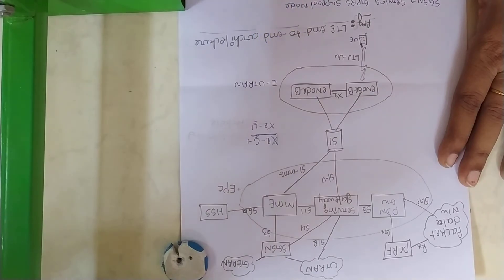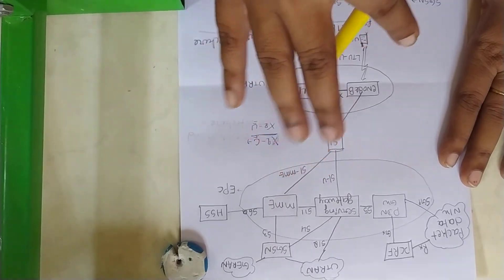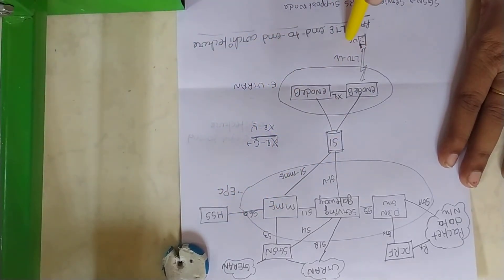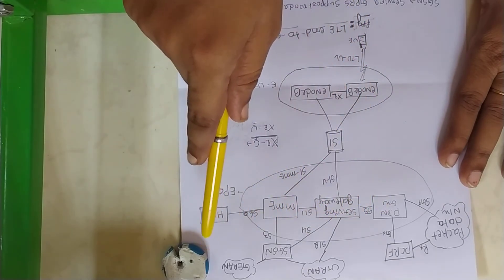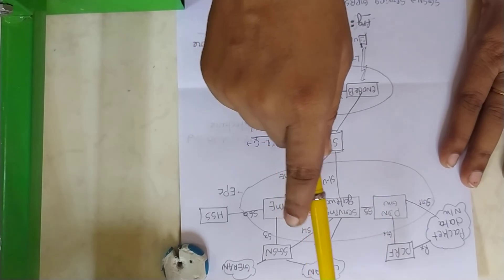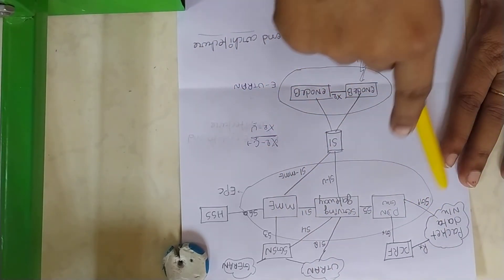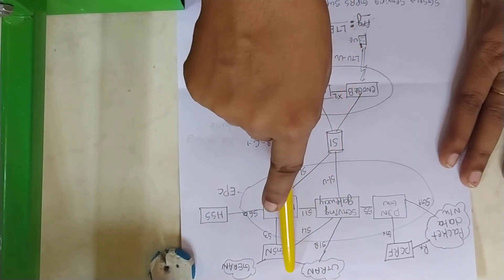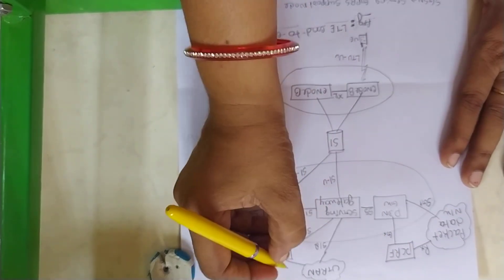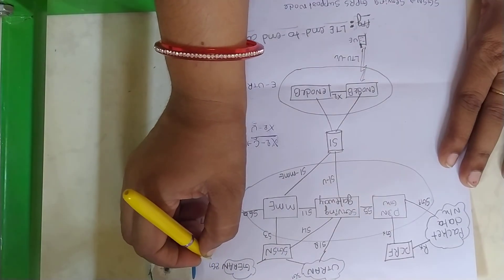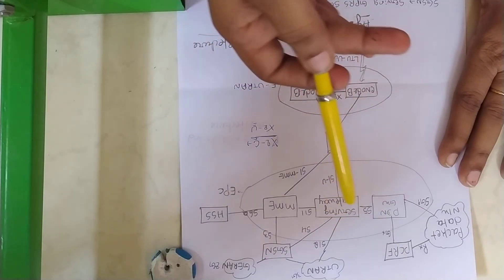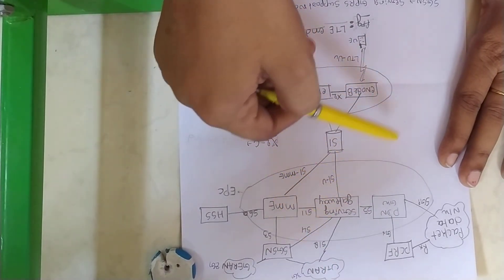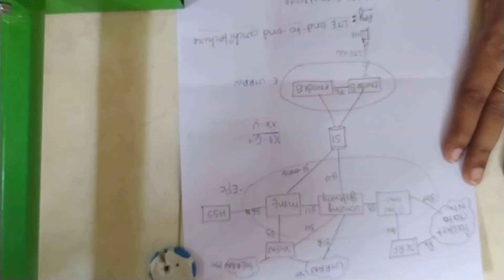This is all about your LTE end-to-end network architecture. See here, mainly it consists of EPC, EUTRAN, and UE. EPC consists of PDN, Serving Gateway, MME, and it makes an interface with HSS, SGSN, PCRF, packet data network, UTRAN, and GERAN. UTRAN is a 3G network and GERAN is a 2G network. This 4G LTE interacts with 3G and also 2G networks.